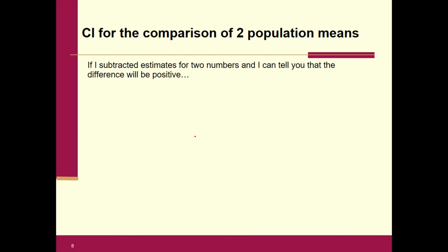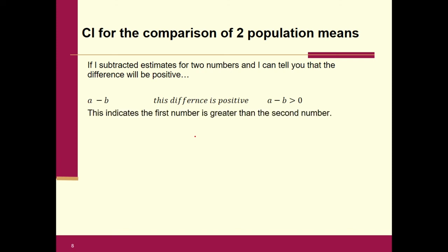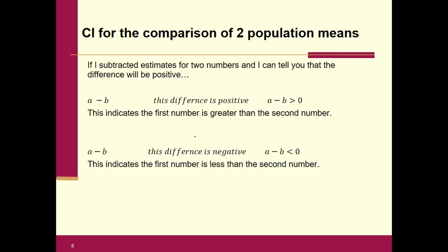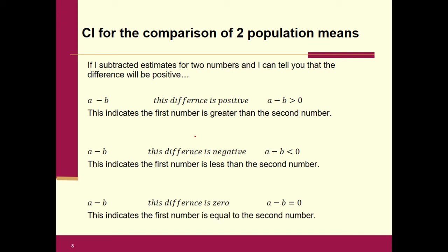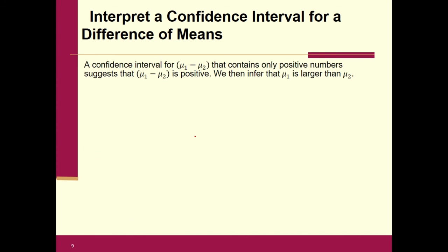Let me remind you — all the same rules apply as in the last section for interpreting a confidence interval. If I subtracted estimates for two numbers and I can tell you the difference will be positive, this indicates that the first number is greater than the second. If the difference is negative — less than zero — this indicates the first number is less than the second. And if the difference is zero, the first one is equal to the second number. So in order to figure out if mu one or mu two is greater, we're going to create a confidence interval for mu one minus mu two.